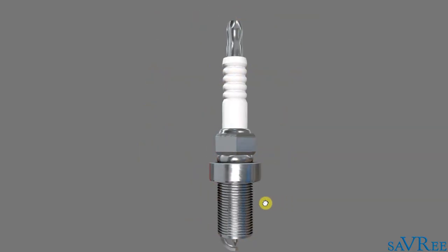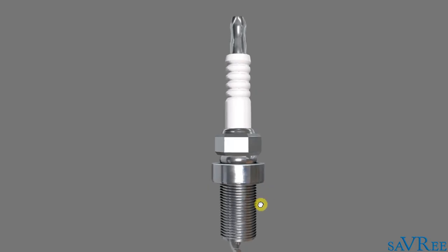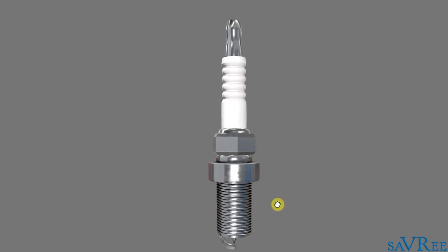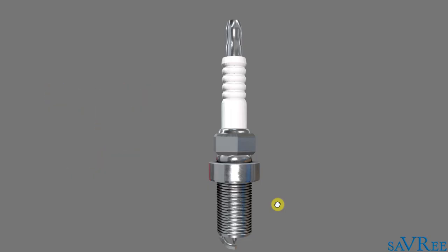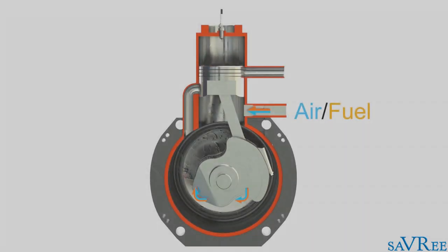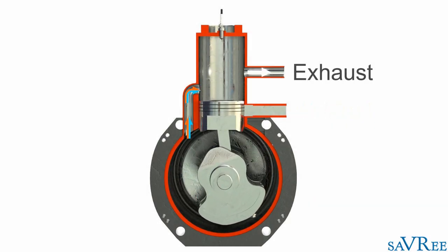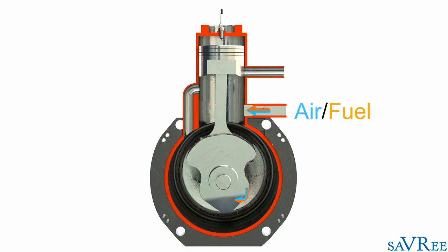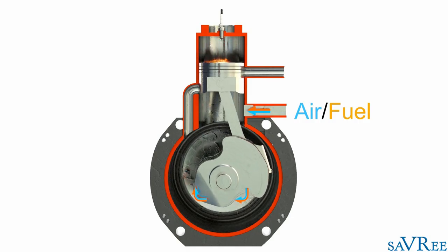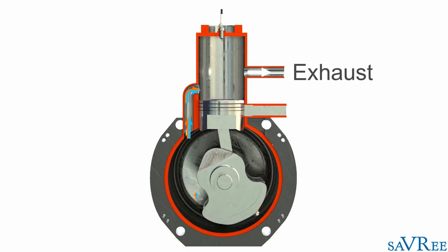We can see a spark plug in front of us now — this is our interactive 3D model. Spark plugs are used in gasoline and petrol engines. We refer to the fuel as gasoline in the States, whereas in the UK we refer to it as petrol — the fuel is the same, just two different names. We use a spark plug to ignite this petrol or gasoline. As we can see, in a two-stroke engine, as the piston approaches top dead center, there is a spark from the spark plug which ignites the fuel, and then we get our power stroke.